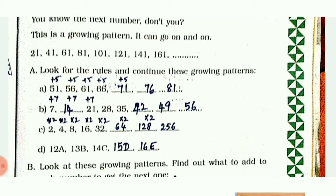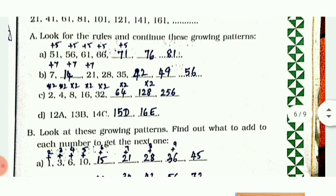Next is patterns with multiplication: 2×2 is 4, 4×2 is 8, 8×2 is 16, 16×2 is 32, 32×2 is 64. In the same way it is getting repeated. The next one is: 12A, 13B - numbers are getting increased by 1 and the alphabet is also getting increased by 1.